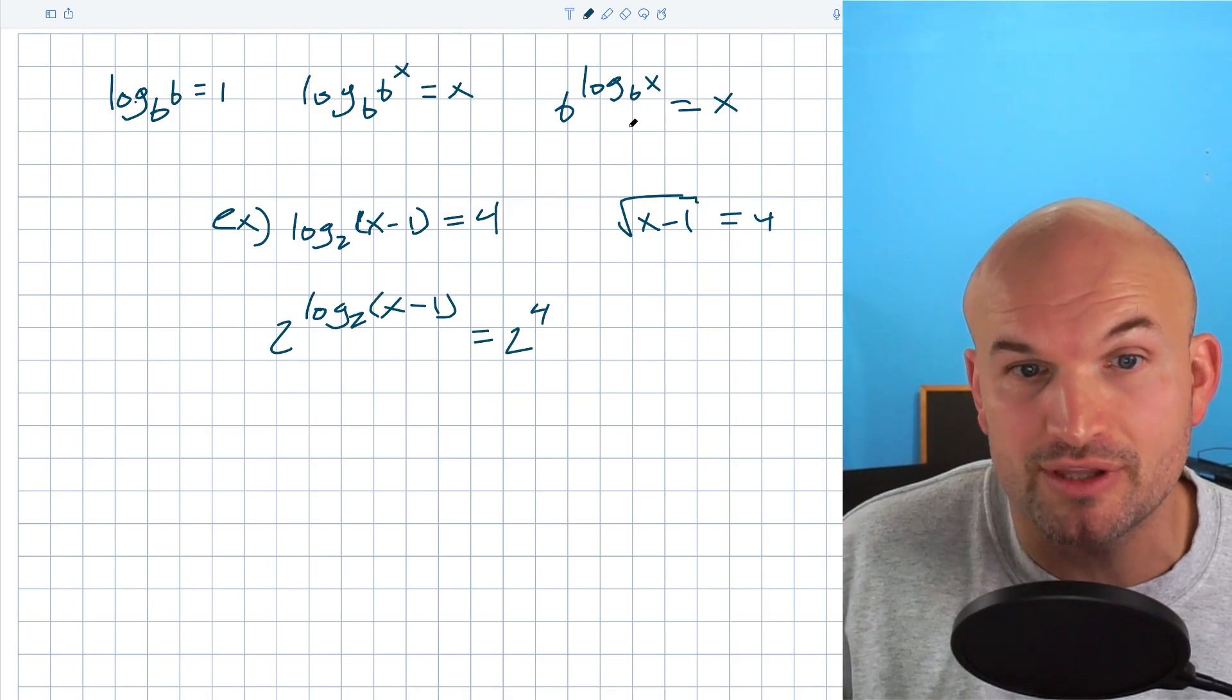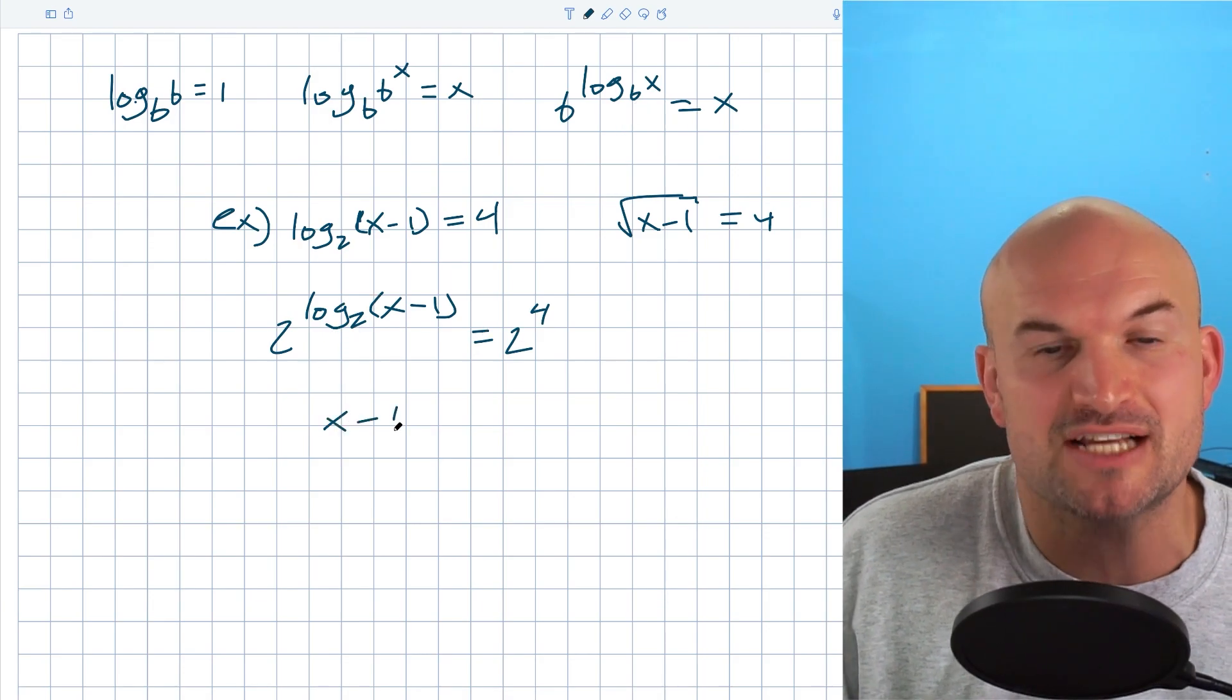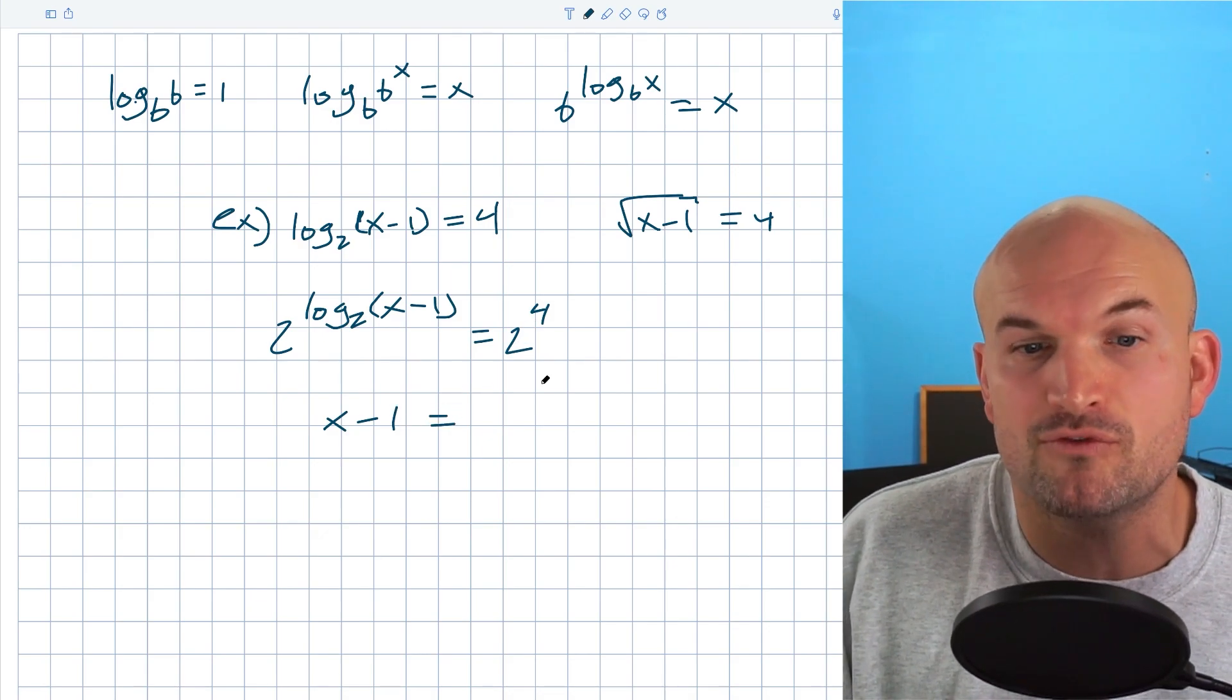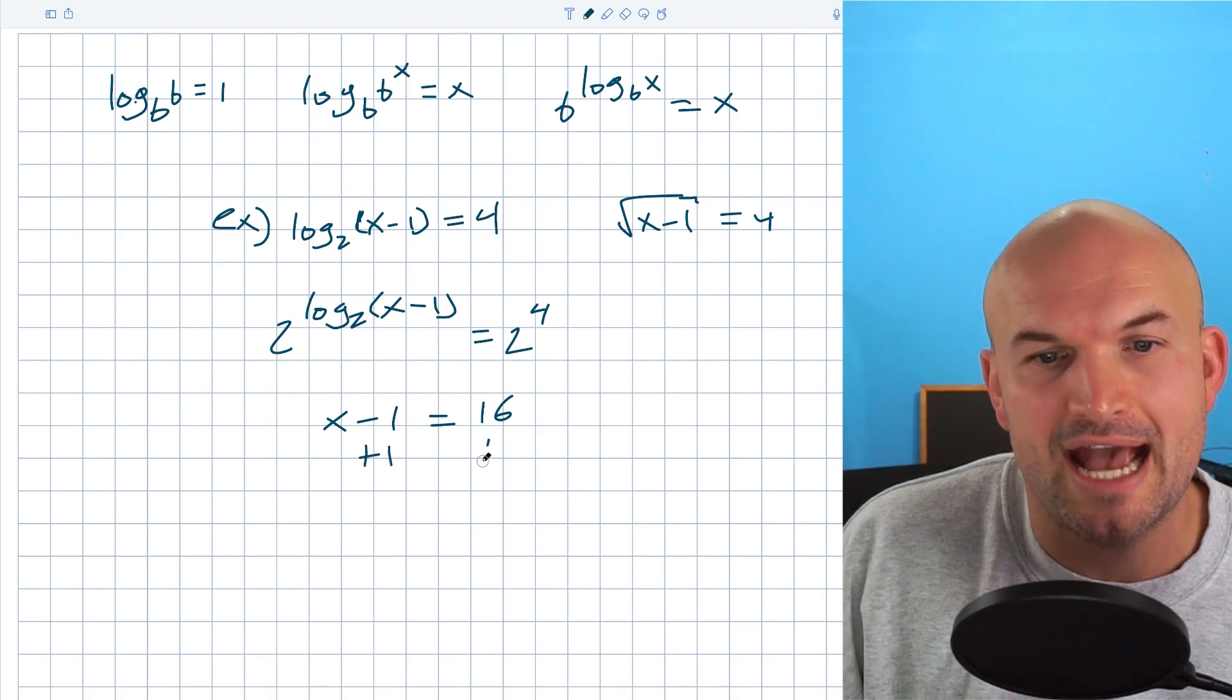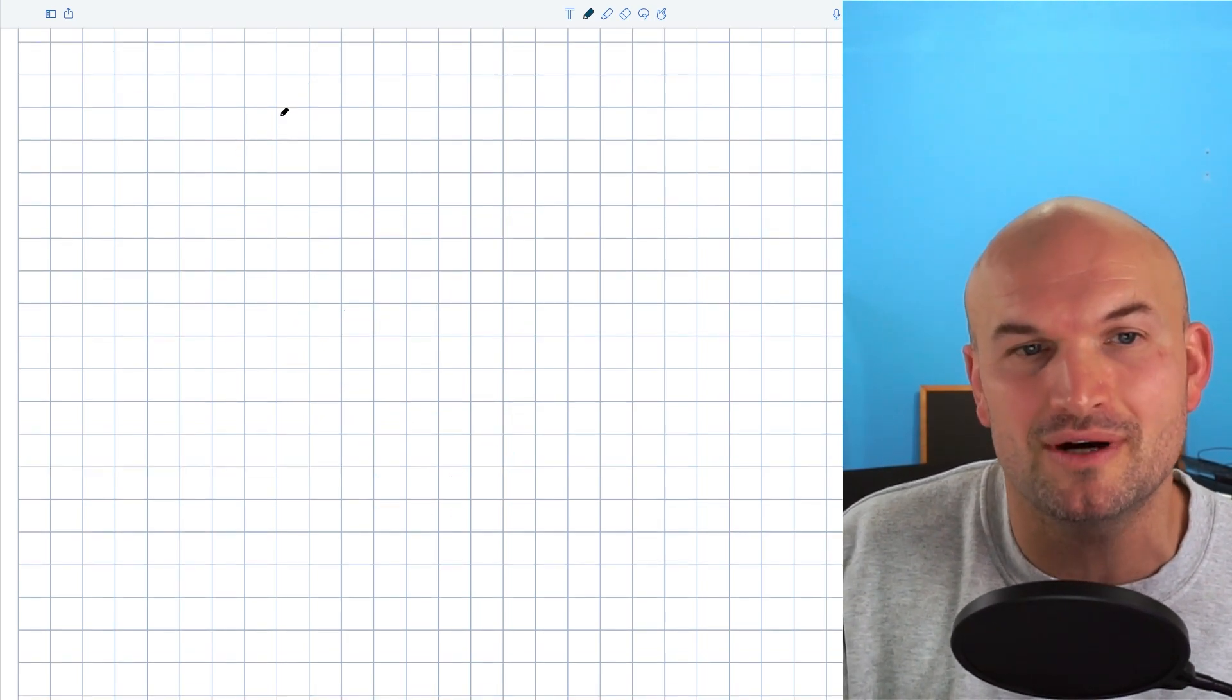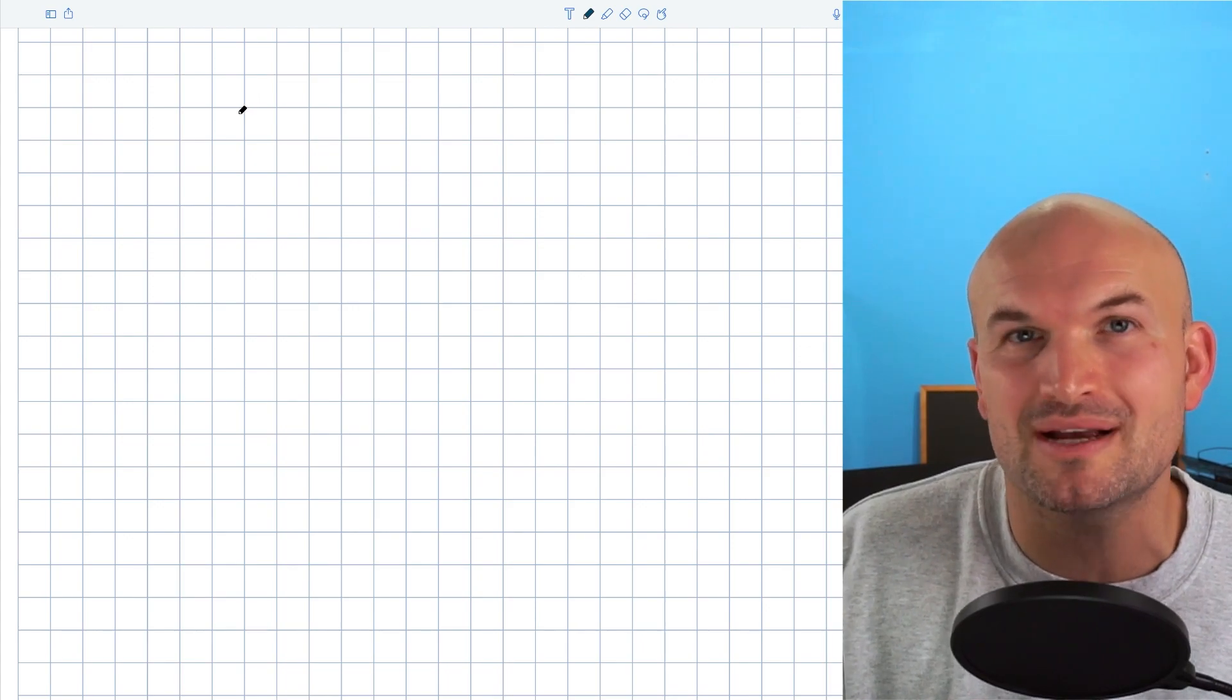Now using the rules of logarithms, this can now be expressed as x minus 1. You can see it's no longer inside of the argument. And now I just need to calculate 2 to the fourth power, which is going to be 16, and then add 1 to both sides and x equals 17. So that's the main idea that we're looking for. Now let's go and take a look at one that has a little bit more complicated of a solution.